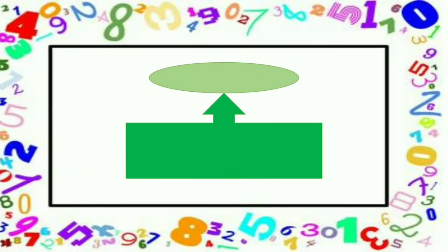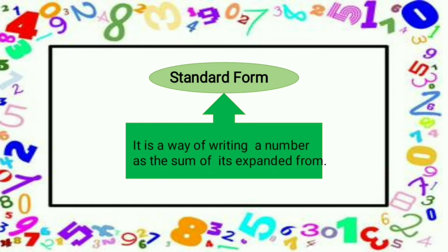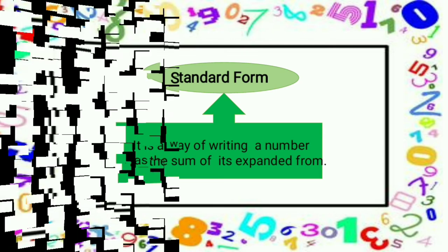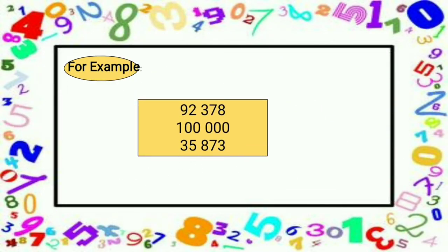Let's proceed to standard form. What is standard form? Standard form is a way of writing a number. I have here examples of standard form: 92,378; 100,000; 35,873. These are examples of standard form — it can be written in numbers.